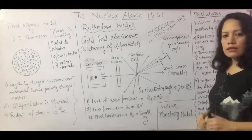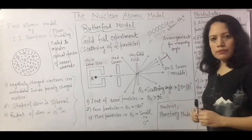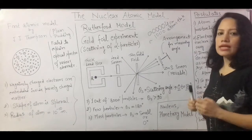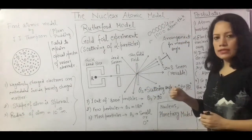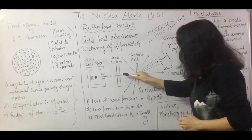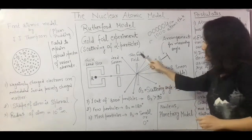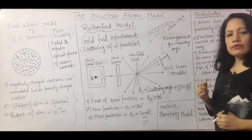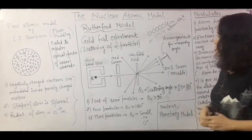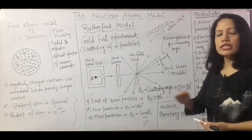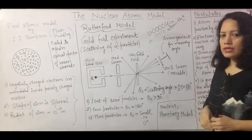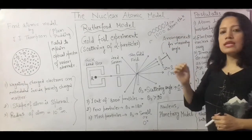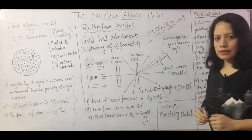The lead box was chosen because lead has a very high atomic number and its density is also very high, so it acts as a shielding material for radiations coming from radioactive substances. The lead screen is used to collimate the beam into a very thin line so that it may fall on the gold foil. Gold foil was chosen because gold is a very highly malleable material — it can be beaten into very thin sheets. The thickness chosen was 0.00004 cm, which is of the order of 1000 atoms thick, and this is not possible with any other element.